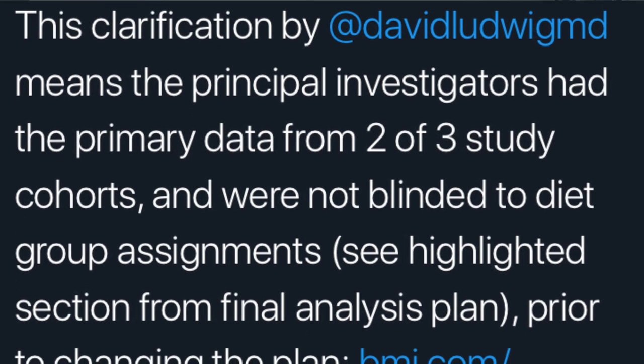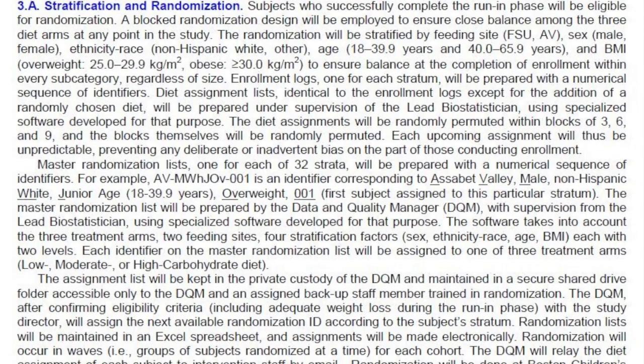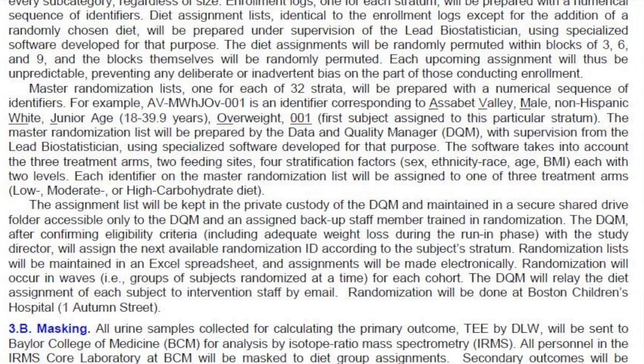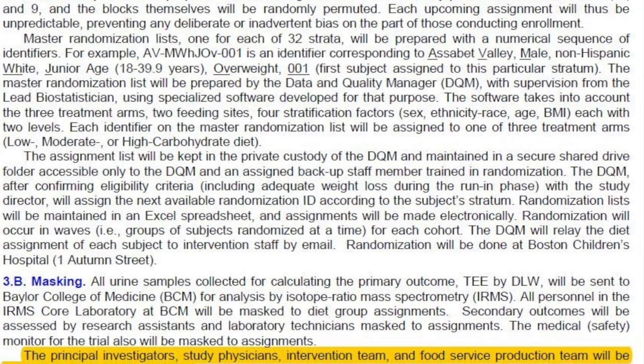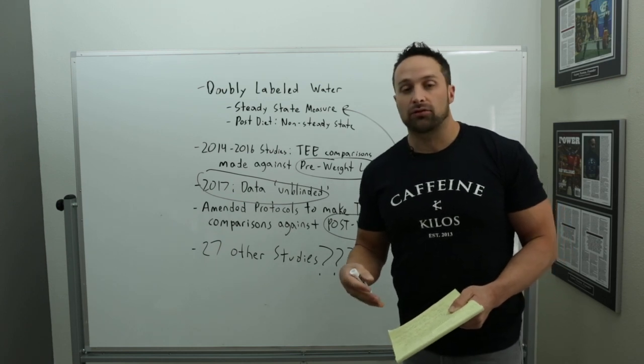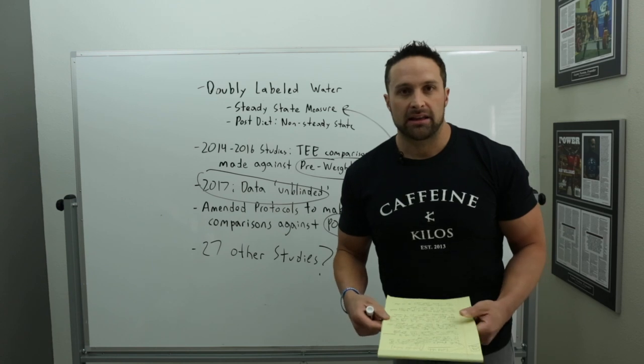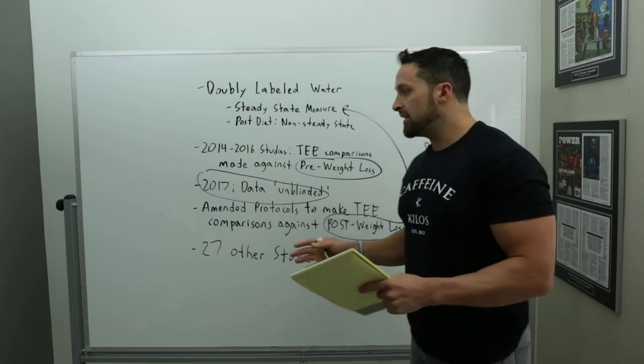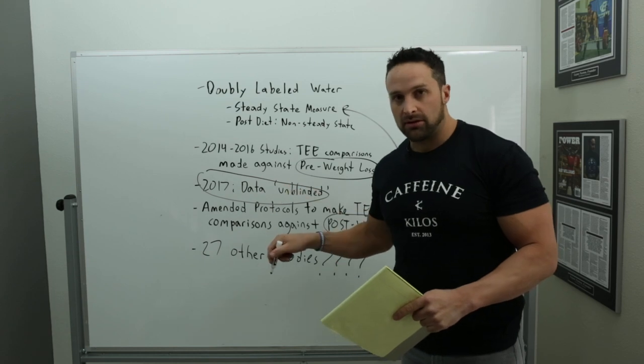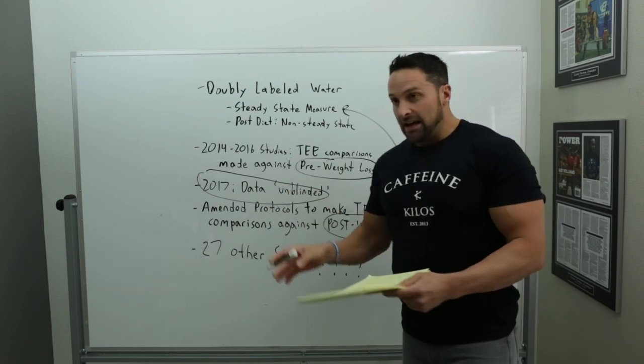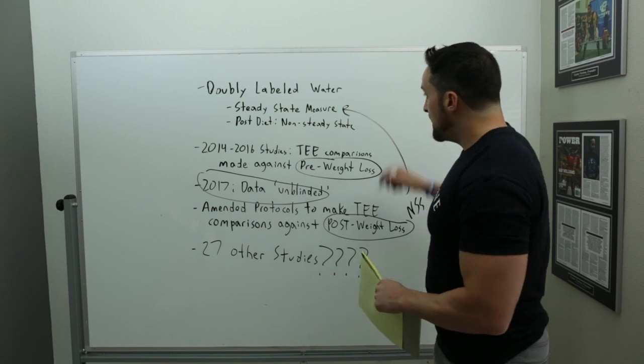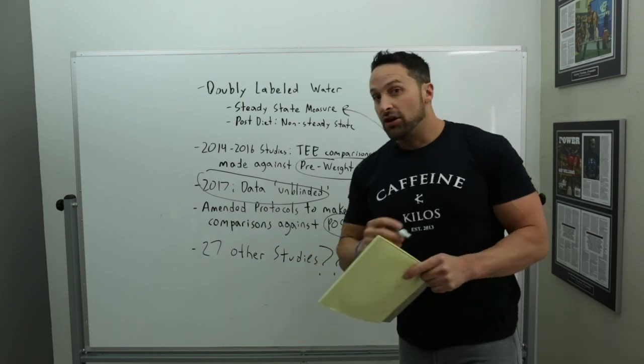And they re-ran, it was Kevin Hall and another, a couple other researchers, they re-ran the data and found that there was absolutely no difference between the diets on energy expenditure when they used the original proposal. Now, what I am not doing is accusing these researchers of trying to fraudulently alter their data or anything like that. I can't speak to their motivations. All I know is, I think it was in seven of eight studies, they had it a certain way, then they changed it for this one particular study. So, again, once they, if you use the original data that they proposed, the original way to measure this doubly labeled water, the original comparisons, there's no difference.